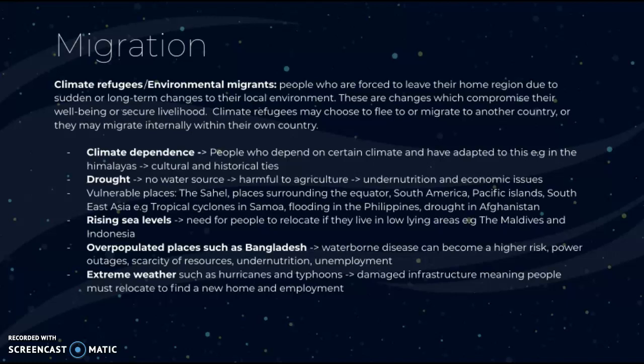Rising sea levels create the need for people in low-lying areas such as the Maldives and Indonesia to relocate. Overpopulated areas like Bangladesh face higher risks of waterborne disease due to high population density. Power outages, resource scarcity, undernutrition, and unemployment are also common. Extreme weather such as hurricanes and typhoons damages infrastructure, forcing people to relocate. These are the links between climate change, migration, and the creation of climate refugees or environmental migrants.